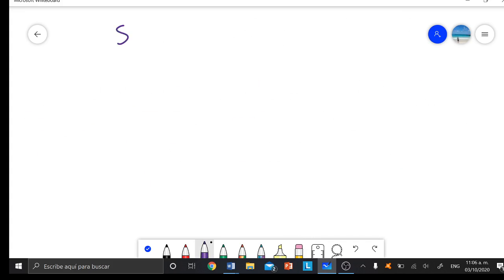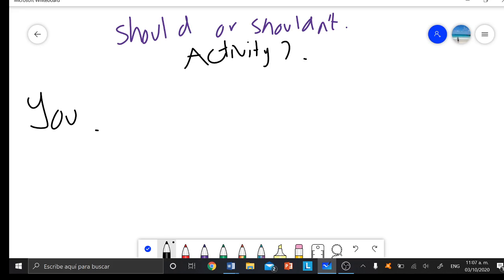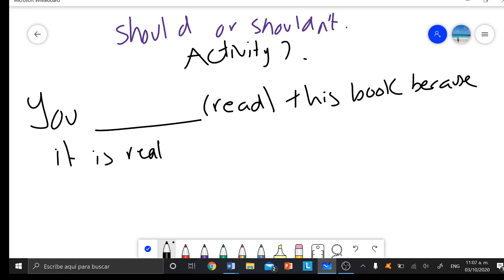In the example of activity number two, you have to select 'should' or 'shouldn't'. An example will be like this: You lying, parentheses read. Ya sabemos que 'read' significa leer. This book because it is really boring, porque está muy aburrido.